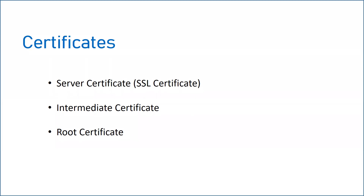Overall, for a complete end-to-end SSL configuration with a third-party SSL, you need three certificates: one is your server certificate (also called the SSL certificate, which contains your identity and public key), second is an intermediate certificate, and third is a root certificate. All these certificates you have to import into your keystores, and then that keystore you need to point to your applications to create identity and trust for end-to-end SSL communications.